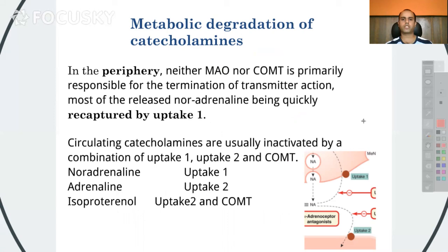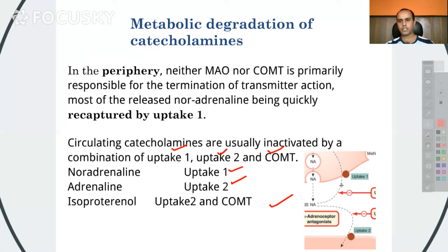In the periphery, neither MAO nor COMT is primarily responsible for the termination of transmitter action — most of the released neurotransmitter is quickly recaptured by Uptake 1. Circulating catecholamines are usually inactivated by a combination of Uptake 1, Uptake 2, or COMT. For noradrenaline, it is basically Uptake 1; for adrenaline, it is Uptake 2; and for isoprenaline, it is Uptake 2 and COMT. Uptake 1 is reuptake into the same neuron from which the neurotransmitter was released, while Uptake 2 occurs in the postjunctional membrane.